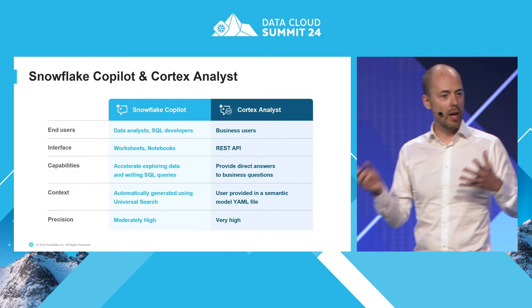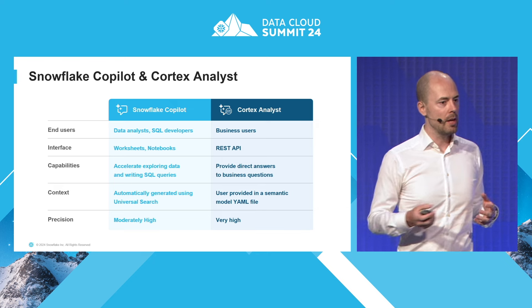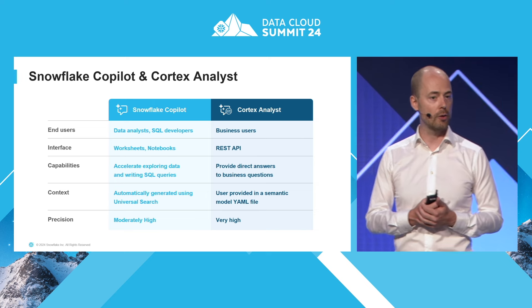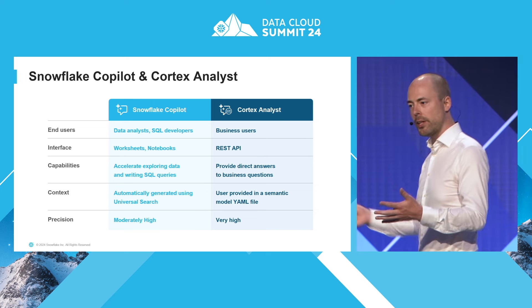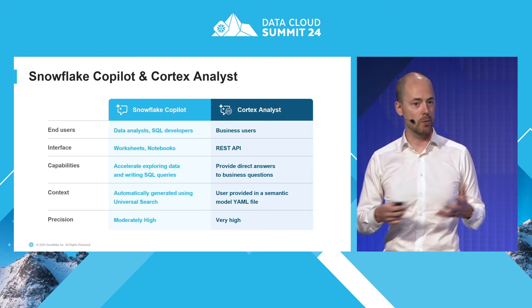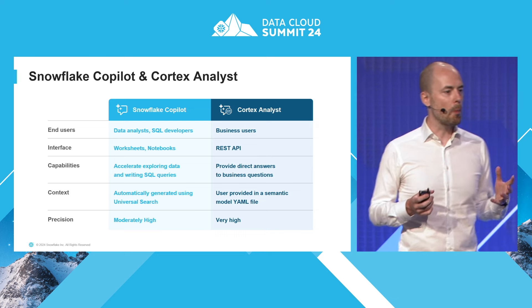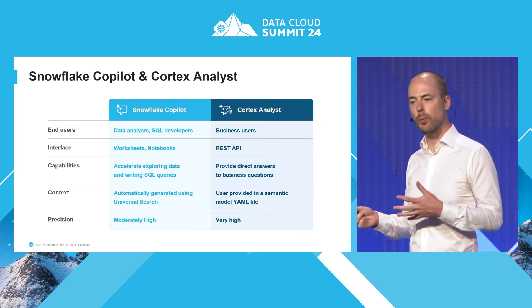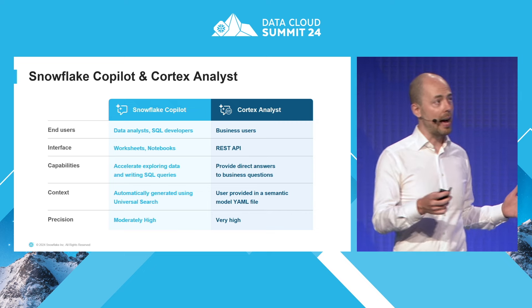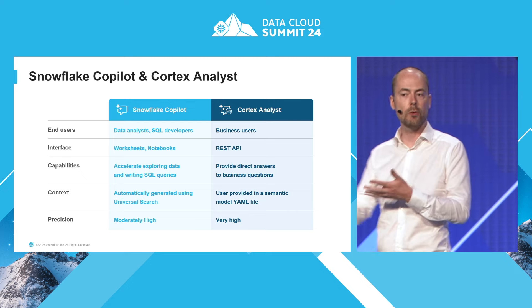For both of these groups we have different products. Snowflake Copilot is geared towards data analysts and SQL developers. It's a feature available in the Snowsight UI — today in Worksheets and Notebooks, but becoming available in more services. Cortex Analyst is geared towards business users as end users. It's an API that allows app developers to build apps where business users can chat with their data. With Snowflake Copilot, there is always a user in the loop, meaning the SQL queries we generate will ultimately be executed by the end user, who is likely an expert that decides whether the SQL query is correct.